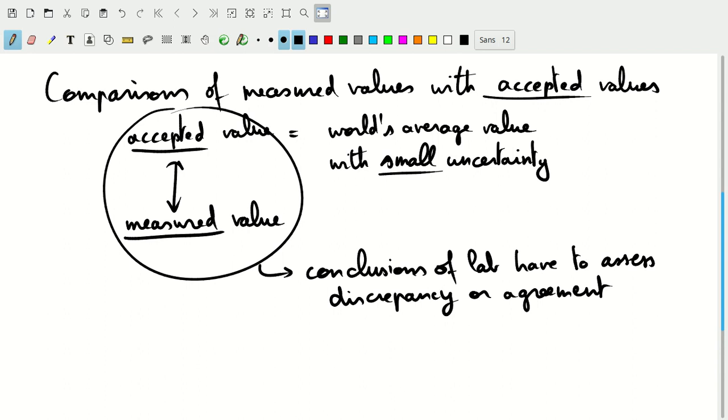So that's where the community is now working on trying to resolve that discrepancy. Similarly, you'll have to make a statement about the discrepancy or the agreement between your measured value and the accepted value. So this is comparison with accepted values.